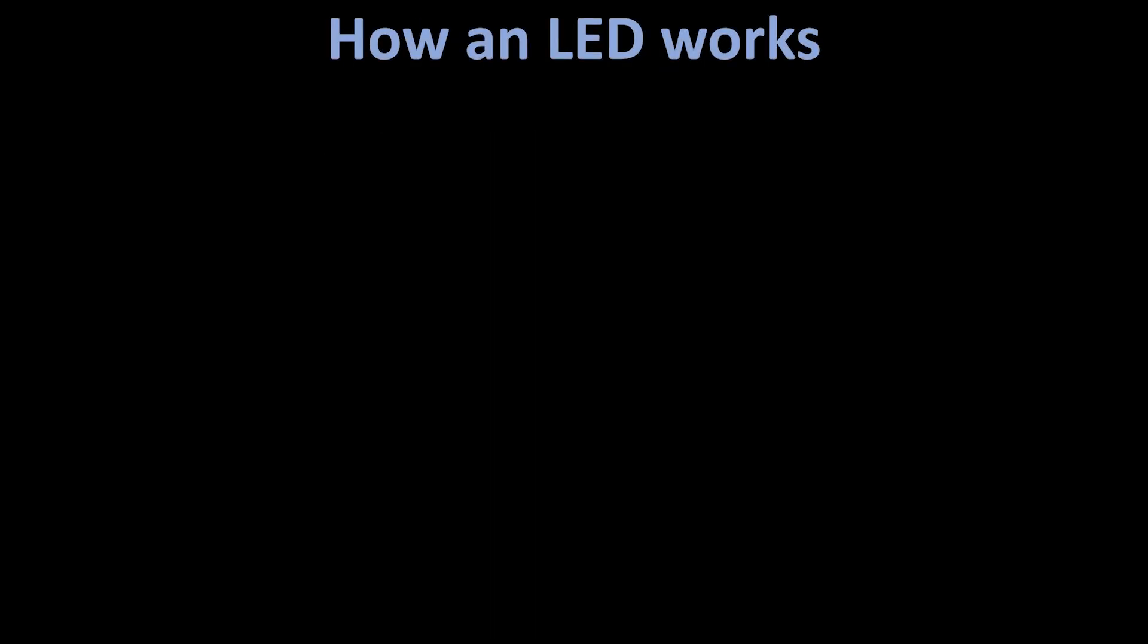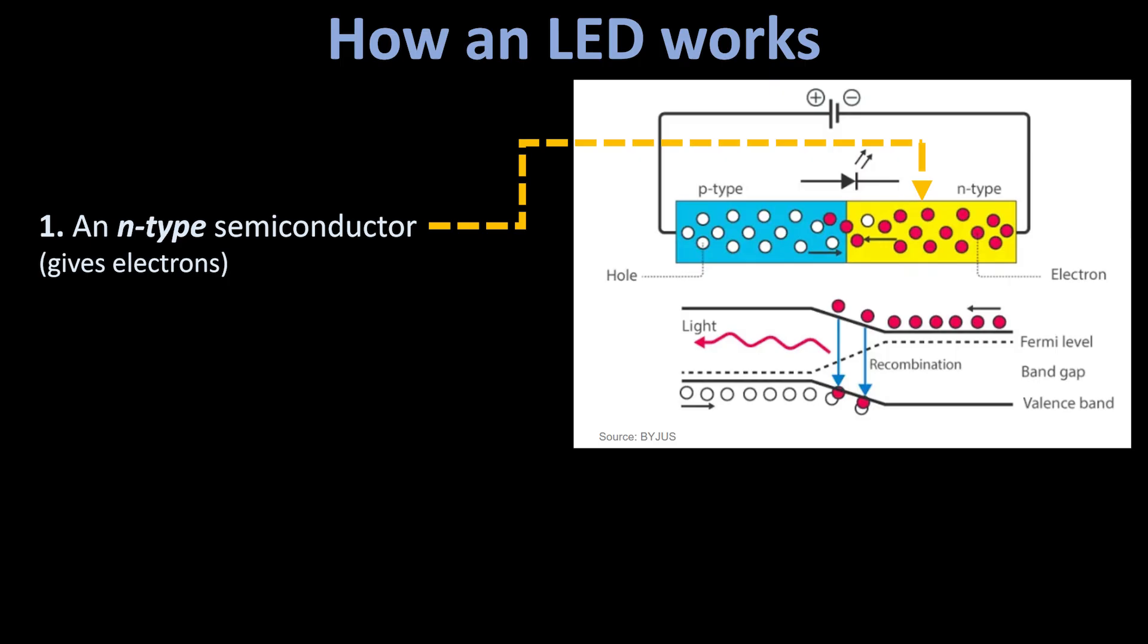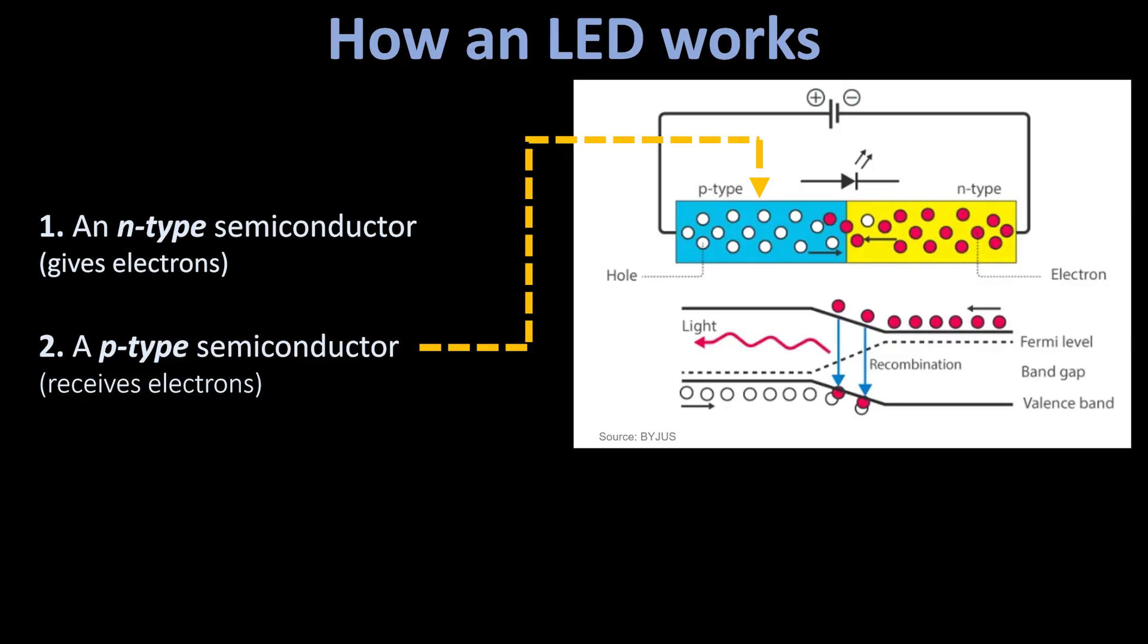So how do LEDs actually make light? LED stands for light emitting diode. A diode is a semiconductor device, a little silicon sandwich that only lets electricity flow one way. When you make that semiconductor out of certain materials, gallium nitride, indium gallium nitride, aluminum gallium arsenide, and you pass current through a junction, something cool happens.